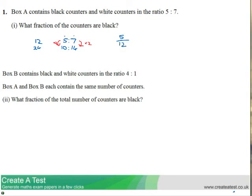So 5 twelfths of the counters are black, and we also know that 7 twelfths are white, which is not the question. So we've got our answer: 5 twelfths.